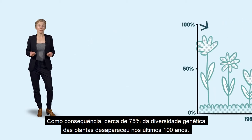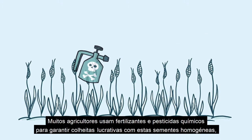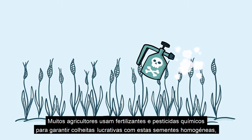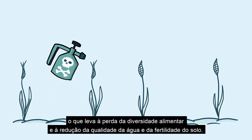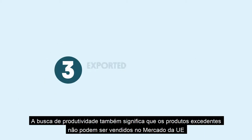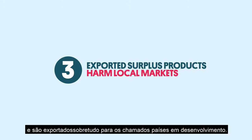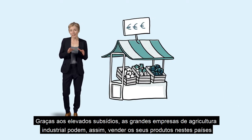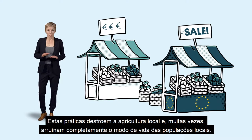Consequently, about 75% of plant genetic diversity has been lost in the past 100 years. Many farmers use chemical fertilisers and pesticides to ensure profitable harvests from these homogenous seeds, which leads to a loss of food diversity and a reduction in water quality and soil fertility. Chasing productivity also means that surplus products that cannot be sold on the EU market are instead mainly exported to so-called developing countries. Through high subsidies, large industrial agro-enterprises can then sell their goods within these countries at way below the market value, destroying local farming and often ruining entire livelihoods for local people.